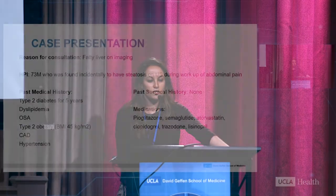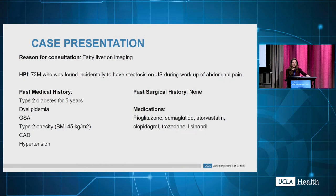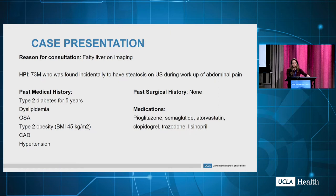We'll start out with the case presentation, and this will sound very familiar to the audience. This was a gentleman who was sent to us at the liver clinic for evaluation of hepatic steatosis, found incidentally on an abdominal ultrasound during the workup of nonspecific abdominal pain. He was a 73-year-old gentleman with many comorbidities, including type 2 diabetes, dyslipidemia, hypertension, and class 3 obesity with a BMI of 45, as well as complications with CAD. His medication list was consistent with that past medical history, and interestingly included pioglitazone and semaglutide, which are both being considered or used for NASH.